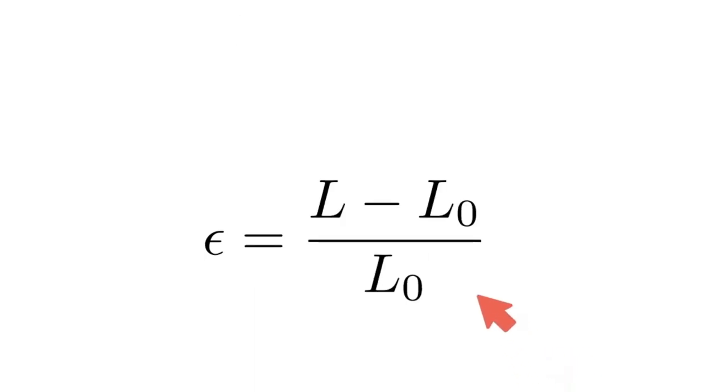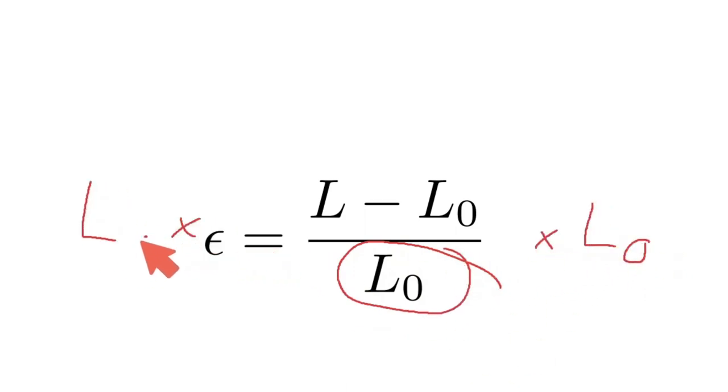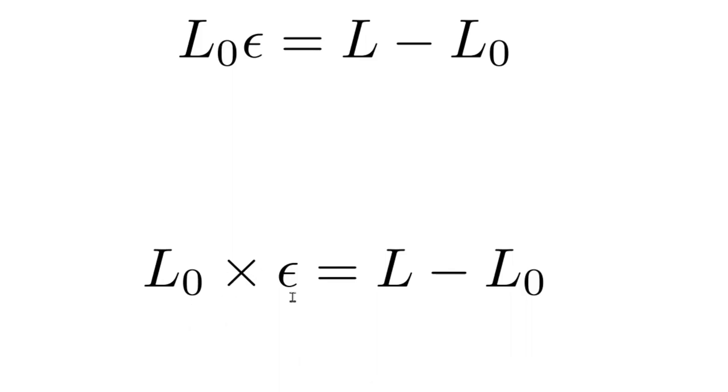So instead what we need to do here is first eliminate the denominator, and the way we can do that is multiply both sides by L0. This is what we'll end up with. I think it's a little bit hard to read this term right here, so if it helps you, put a little multiplication symbol in there.